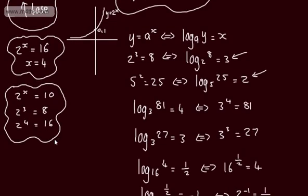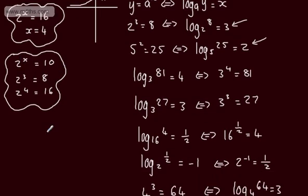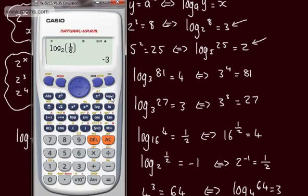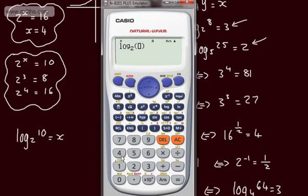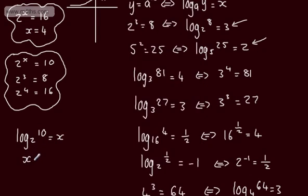Let's go back and answer the original question. We want to solve 2 to the power of X equals 10. We can write this as log to the base 2 of 10 equals X — we're looking for the power that 2 is raised by to get 10. Evaluating this on a calculator, we get X equals 3.32, correct to 3 significant figures. We don't have to guess or use trial and error.